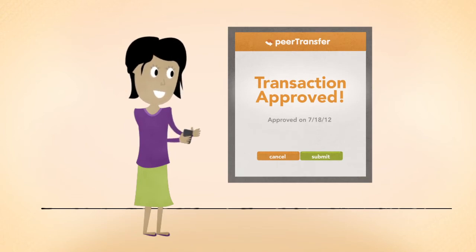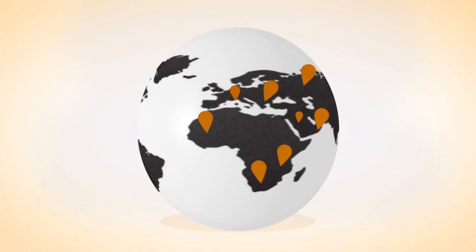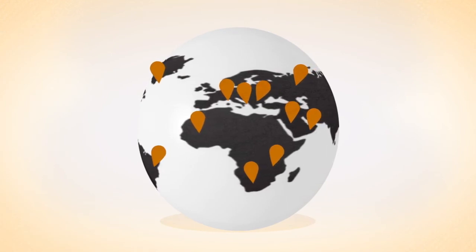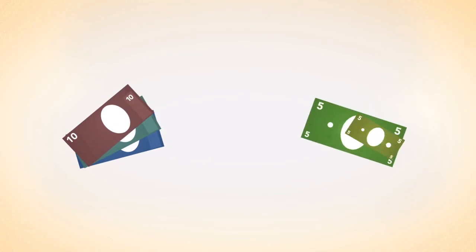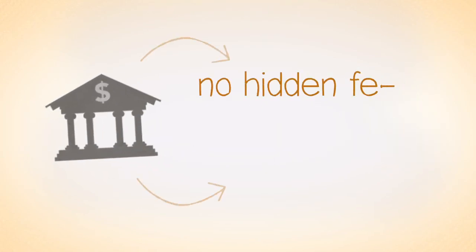Then, Peer Transfer did its magic. You see, because Peer Transfer helps so many students in so many countries, they've got more negotiating power. So they looked around and then converted Aditi's rupees to US dollars at the bank that gave her the best possible rate.